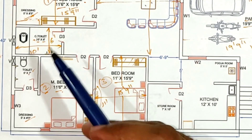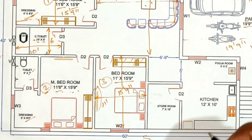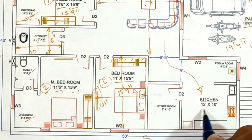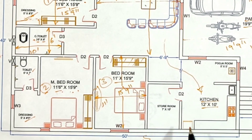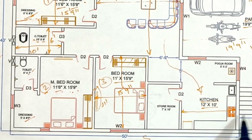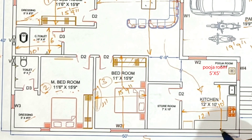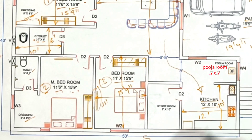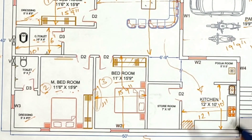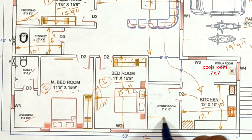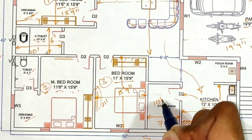Almost all the bathrooms and bedrooms are covered. The next very important thing in the house is the kitchen. In the kitchen, we have to provide a space of 12 feet by 10 feet. We have to provide a sink and space for a fridge in this kitchen area.